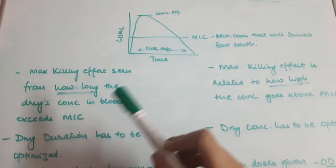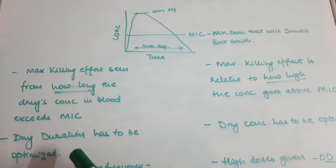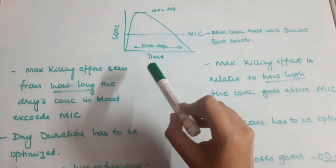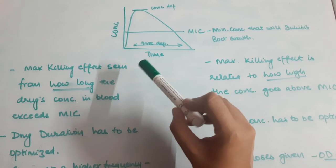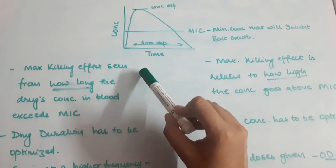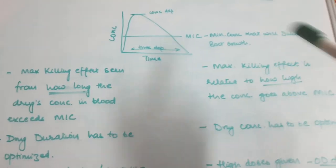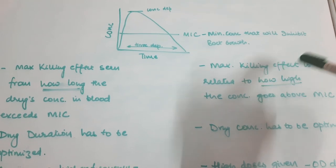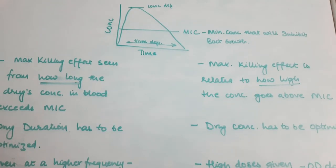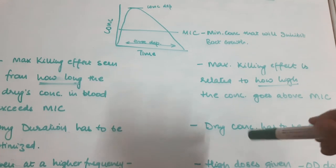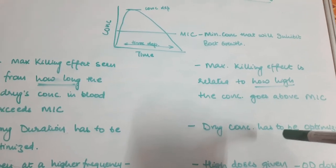In time-dependent killing, drug duration has to be optimized — that is, when we are giving these drugs, we need to check how frequently we are giving them. Whereas in concentration-dependent killing, the drug concentration has to be optimized — that is, how much blood concentration has to be achieved.